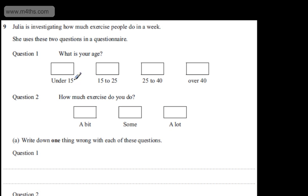This is question number 9. We're told Julie is investigating how much exercise people do in a week. She uses these two questions in a questionnaire. Question 1: What is your age? The options are under 15, 15-25, 25-40, and over 40.